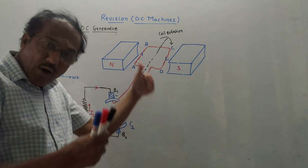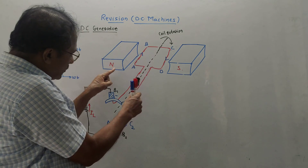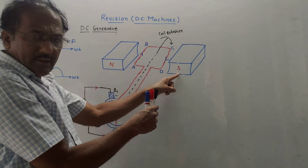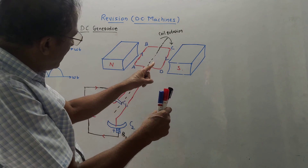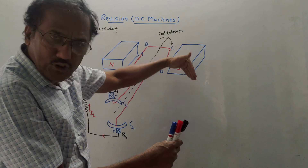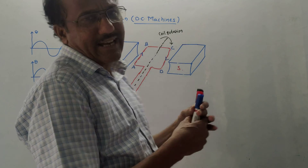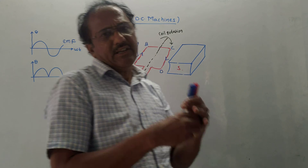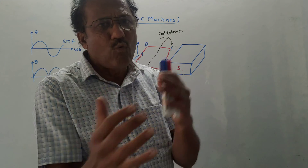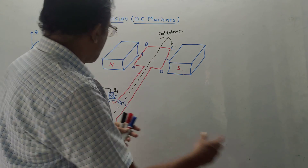Now about the working of DC generator. In the case of a permanent magnet made by North and South Pole, the magnetic lines are from North Pole to the South Pole. According to Fleming's right-hand rule, whenever the magnetic field is cut by some moving conductor, a current is induced.